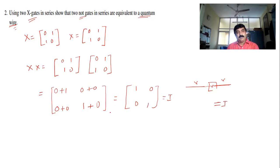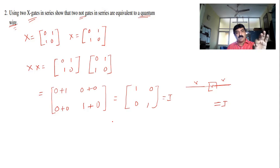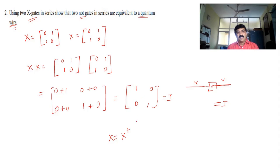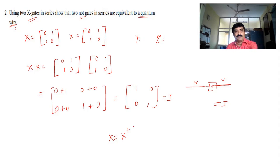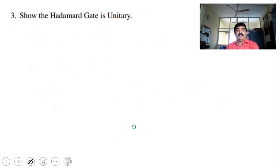In fact, this is a property of Pauli matrices also. For Pauli gates, X = X†. Just recall the Pauli matrix properties. Not only X — it is true even for Y and Z. There are three Pauli matrices. Here I have solved it for X; you can try for Z also. I have given this in my study material — please go through it.